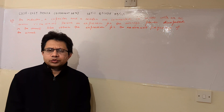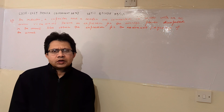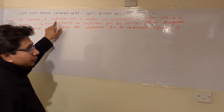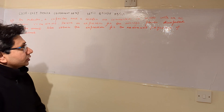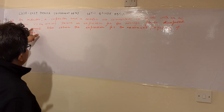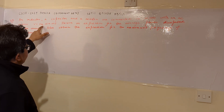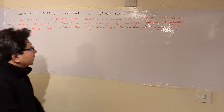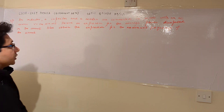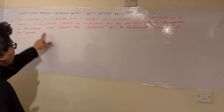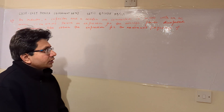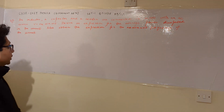Hello students, how are you? Hope you are doing well. The question is: an inductor, a capacitor, and a resistor are connected in series with an AC source V equals Vm sin(ωt). Derive an expression for the average power dissipated in the circuit, and also obtain the expression for the resonant frequency of the circuit.